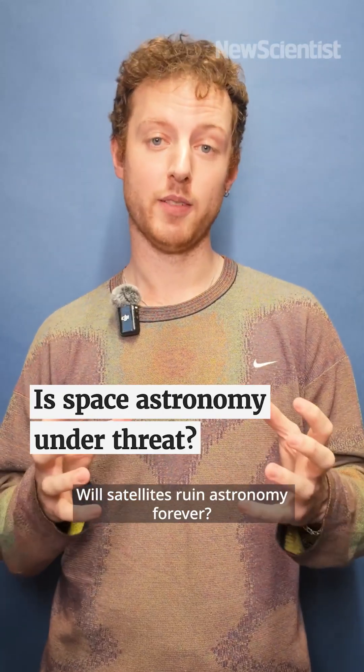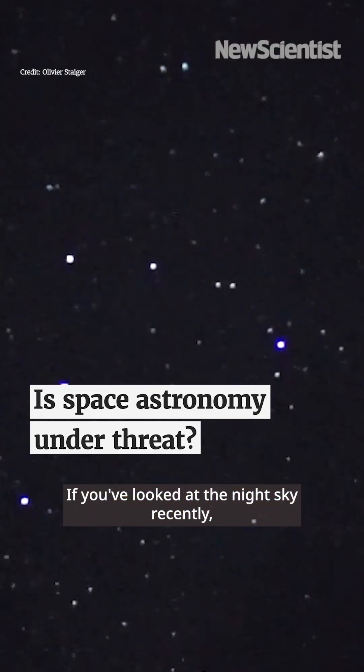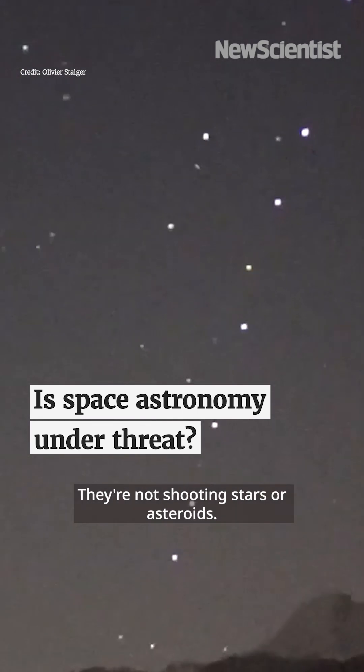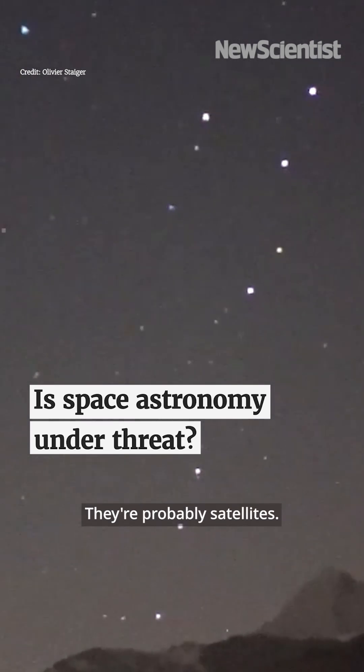Will satellites ruin astronomy forever? If you've looked at the night sky recently, you might have seen these little tracks of light moving across the sky. They're not shooting stars or asteroids, they're probably satellites.